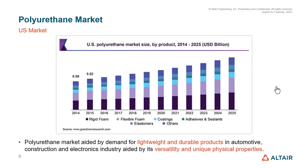There are different kinds of polyurethane foams, and the market mostly demands lightweight and durable products. Especially in the automotive, construction, and electronic industries, the demand for PU foam is high. Because of its versatility and unique physical properties, it can be used for a variety of applications.